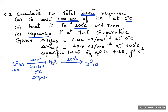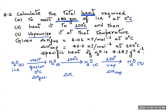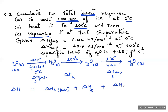Then we heat the liquid water to 100 degrees, maintaining it in the liquid state — this is delta H2. After that, we continue heating and vaporize the water at 100 degrees (the boiling point), converting it to H2O gas — this is delta H vaporization, call it delta H3. The total enthalpy change is delta H1 plus delta H2 plus delta H3.